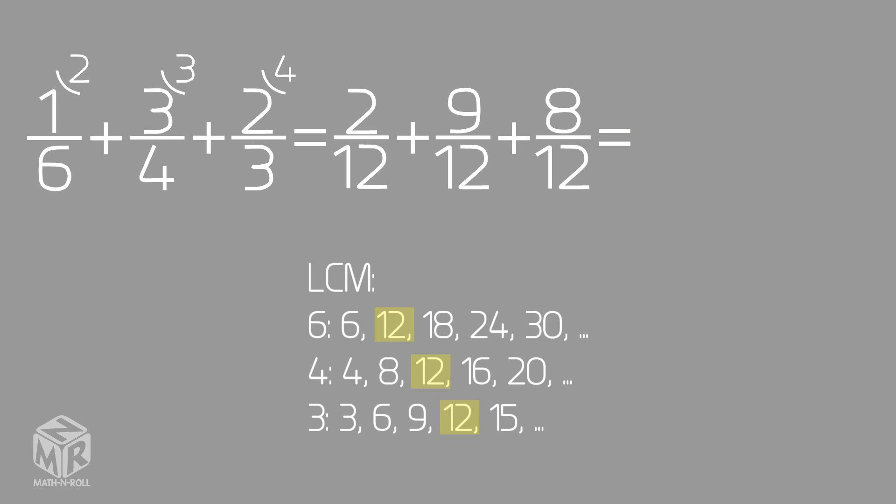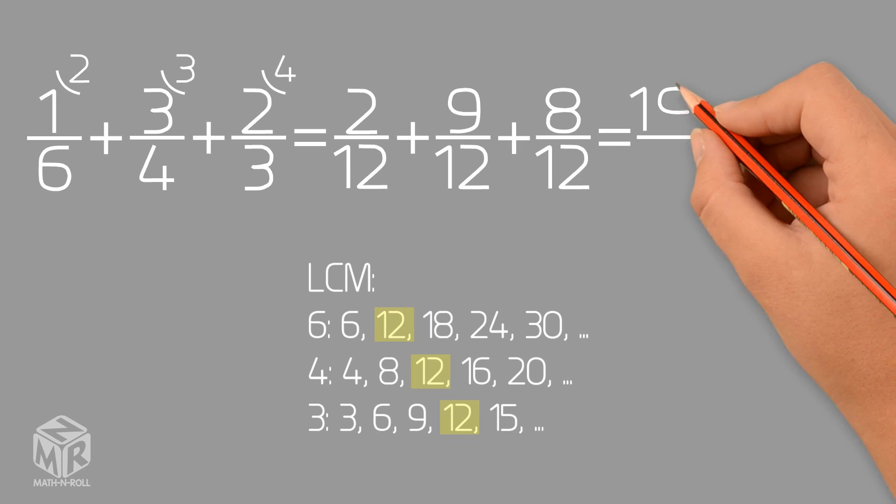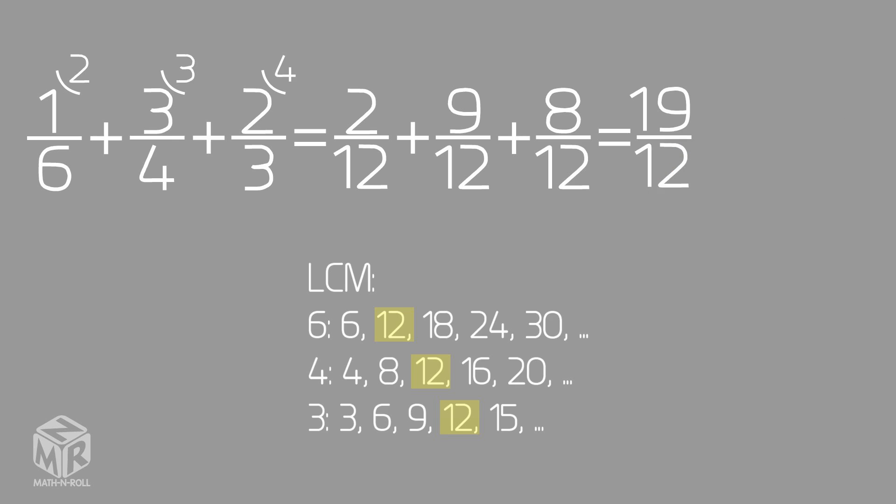Now we add the 3 fractions. 2 over 12 plus 9 over 12 plus 8 over 12 is 19 over 12. We can rewrite this as 1 and 7 over 12.